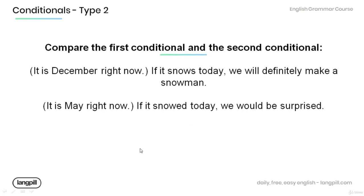And in this sentence, if it snowed today, we would be surprised. This is in the second conditional because it is May right now and it's almost impossible for it to snow.